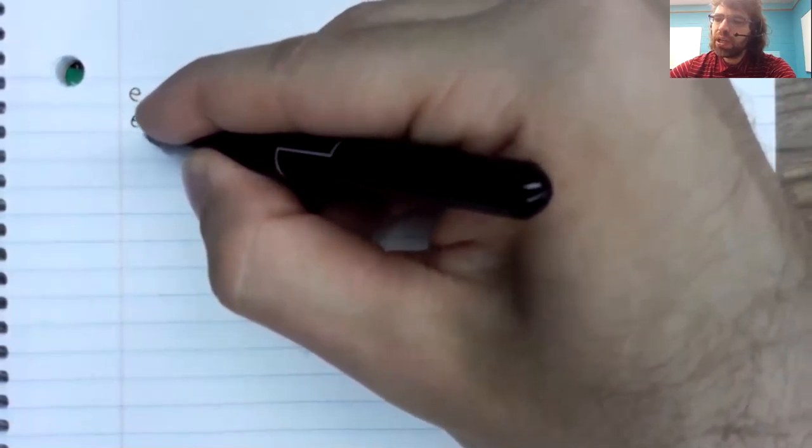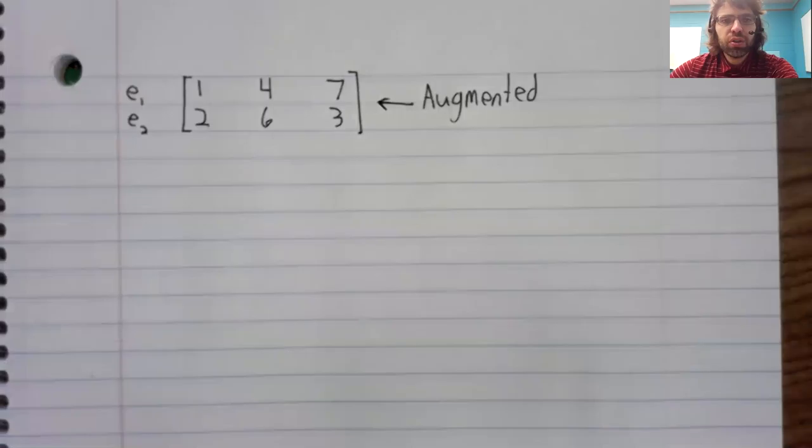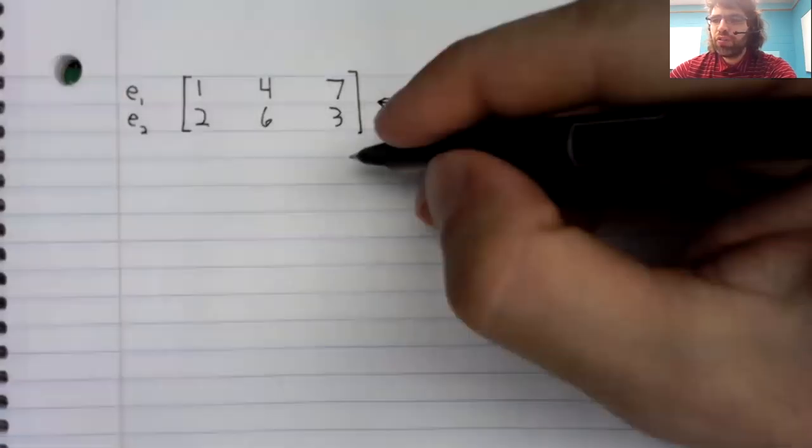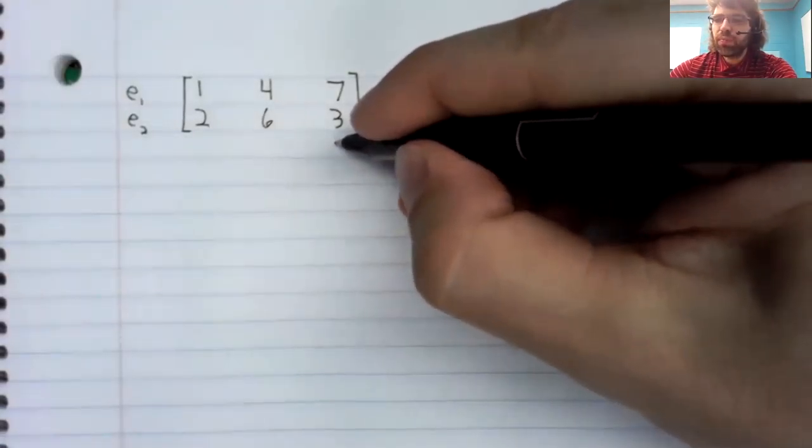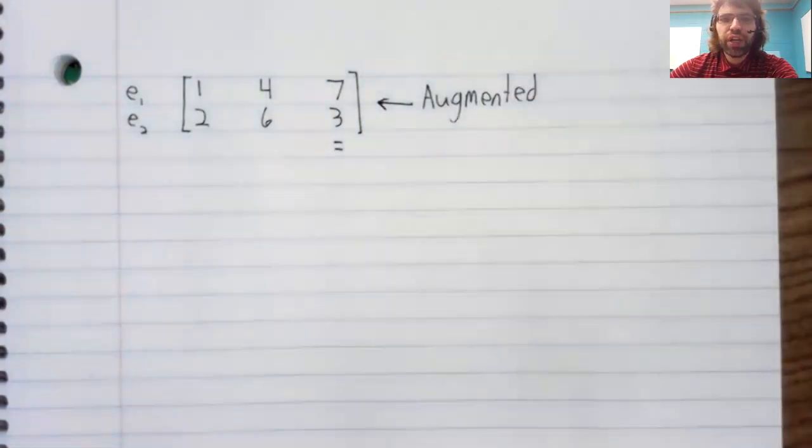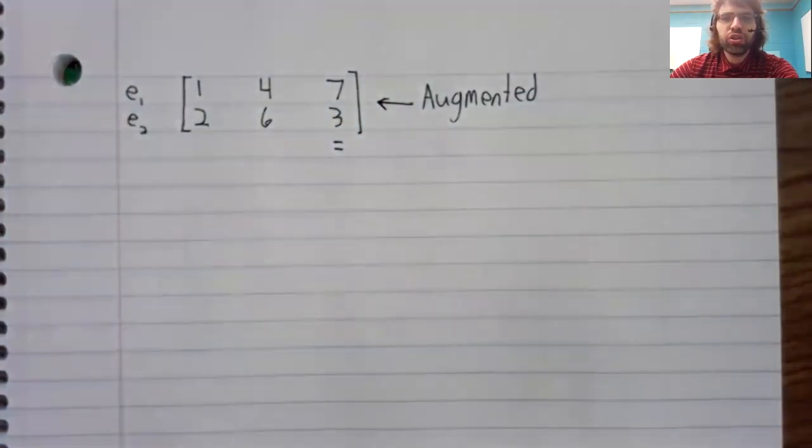Each row corresponds to an equation, so there are two equations. The columns correspond to variables, except for the last column, which corresponds to equality.